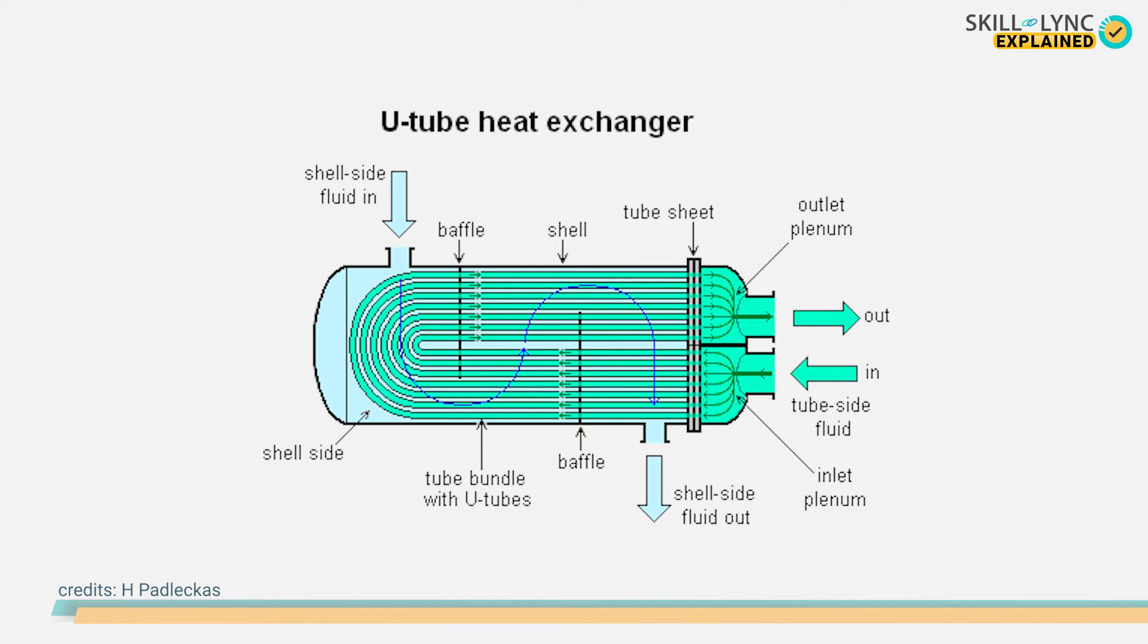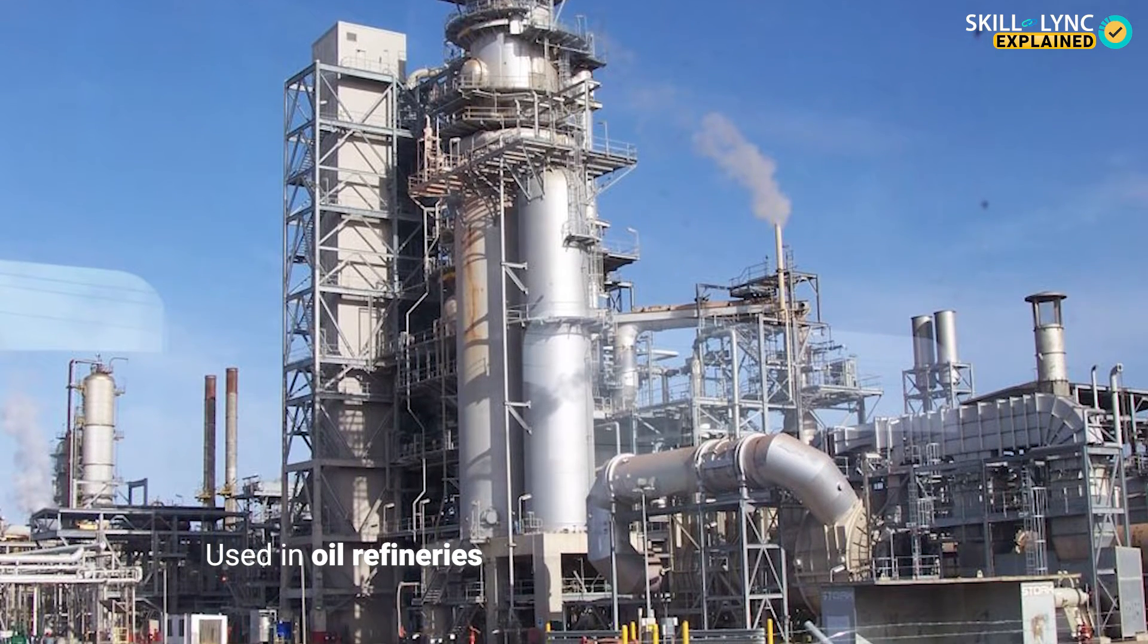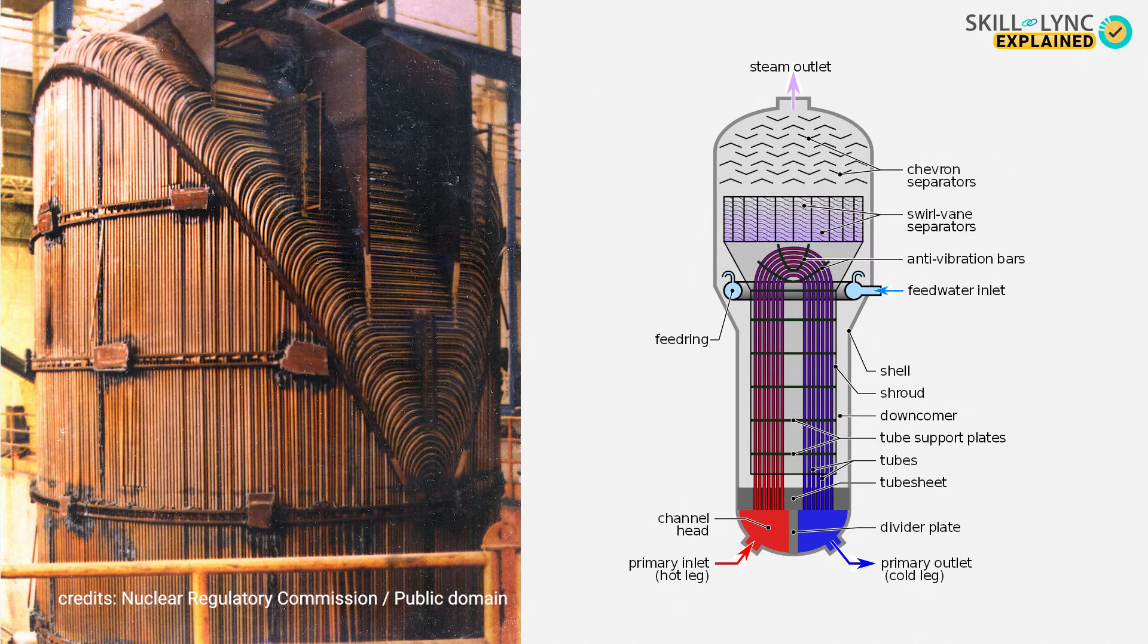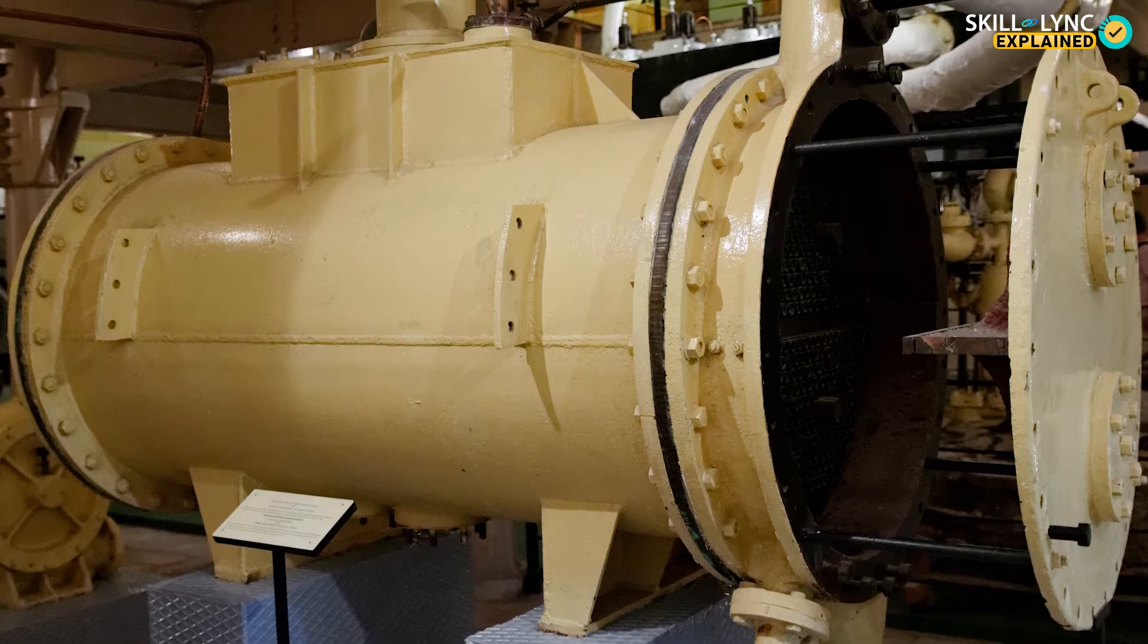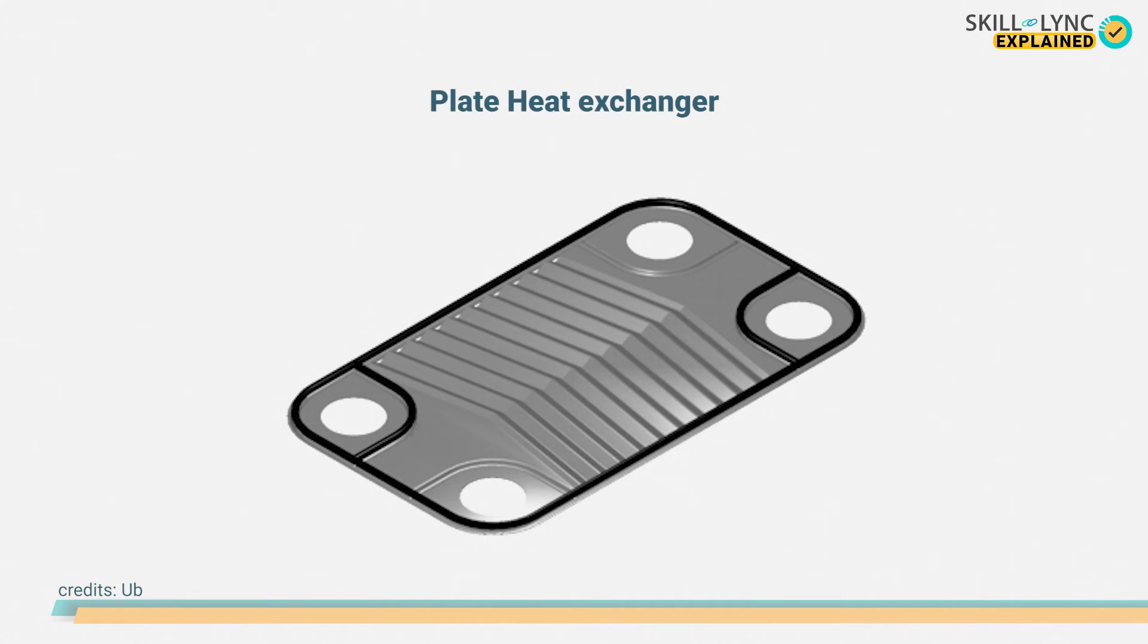The tubes inside the shell can be either straight, making up a straight tube heat exchanger, or the tubes can be in U-shape, thus making up a U-type heat exchanger. Shell and tube type heat exchangers are most commonly used in oil refineries. Generally, they're used in high pressure applications like steam generators of nuclear power plants. They're also used as surface condensers in steam-driven turbines.